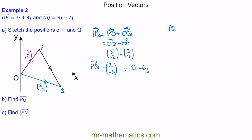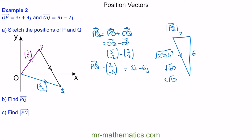Now we want the magnitude of PQ, which is the length from P to Q. We can think of this as the hypotenuse of a right triangle: the i direction gives length 2, and the j direction gives the vertical length 6. The hypotenuse is the square root of 2² plus 6², which is √(4 + 36) = √40, simplified to 2√10. So the magnitude of vector PQ is 2√10.